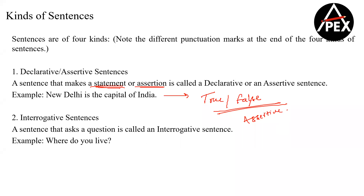Any statement that you can answer with true or false becomes an assertive statement. Now, why do we even use sentences? We use sentences to communicate with each other — to make sure our ideas are moving from us to other people.